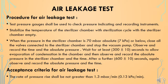For the air leakage test procedure, test pressure gauges shall be used to check pressure indicating and recording instruments. Stabilize the temperature of the sterilizer chamber with a sterilization cycle with the sterilizer chamber empty. When the pressure in the sterilizer chamber is 70 millibar absolute (7 kPa) or below, close all valves connected to the sterilizer chamber and stop the vacuum pump. Observe and record the time and absolute pressure, then wait at least 300 ± 10 seconds to allow evaporation of condensation in the chamber, and record the absolute pressure and time.